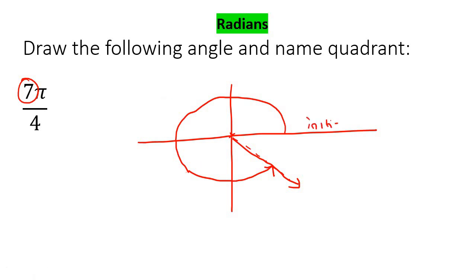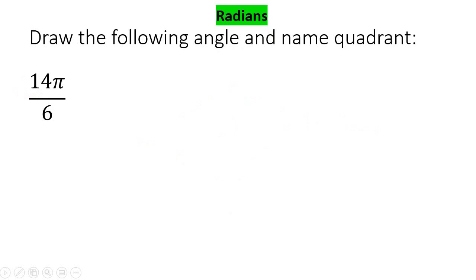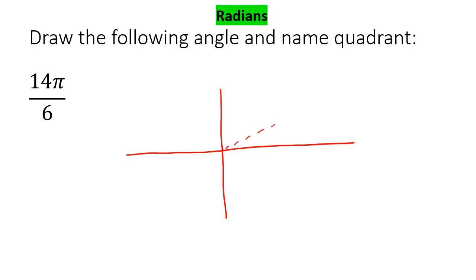This is called the initial and this is called the terminal. Now we have 14 over six. So you're going to break the top part up into six parts, and then we'd have to do the same at the bottom because 14 is going to be quite a lot, so let's just extend.